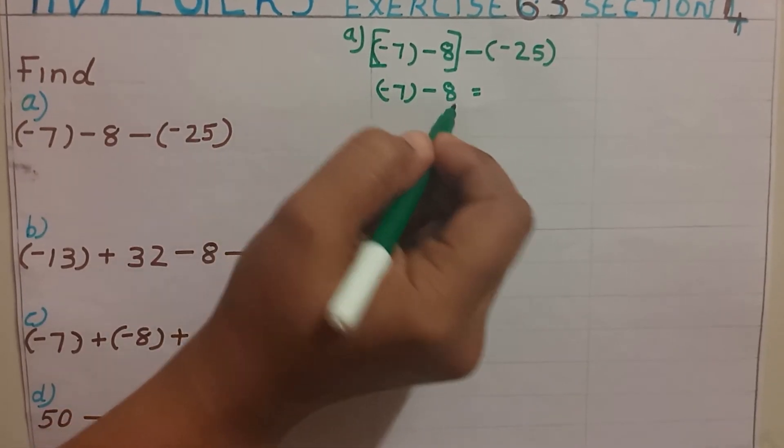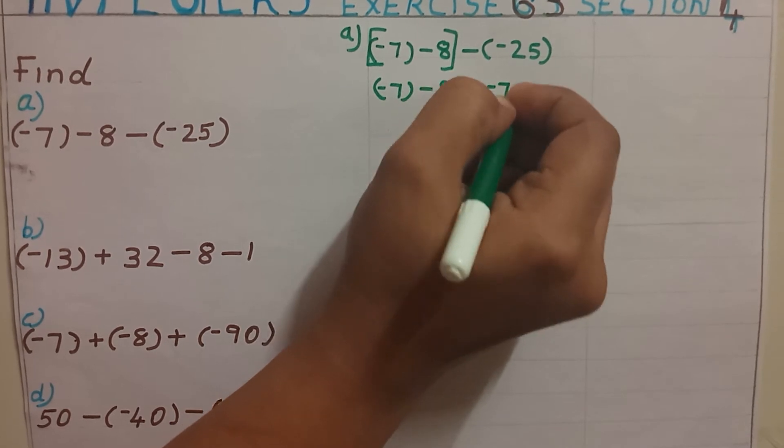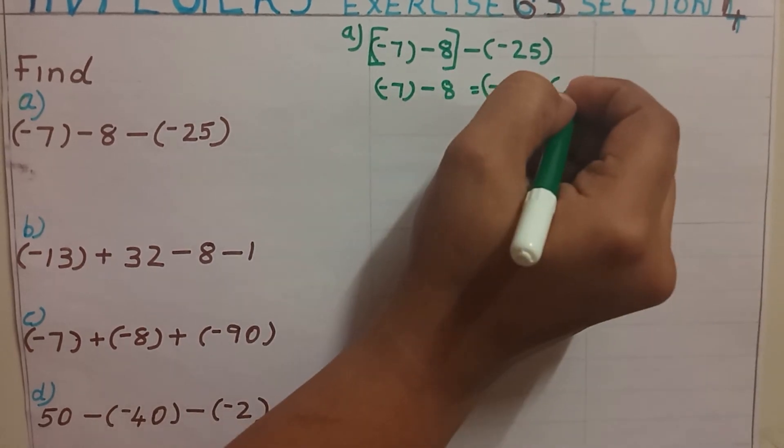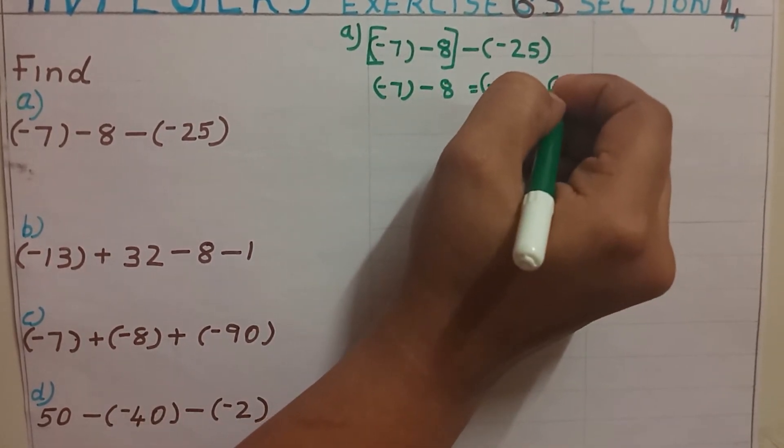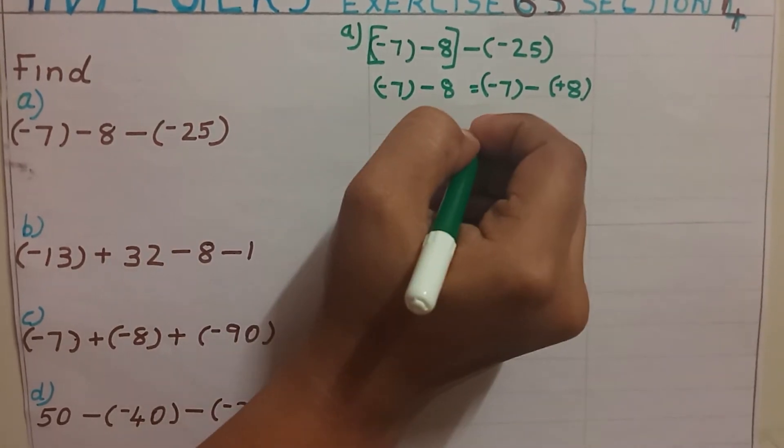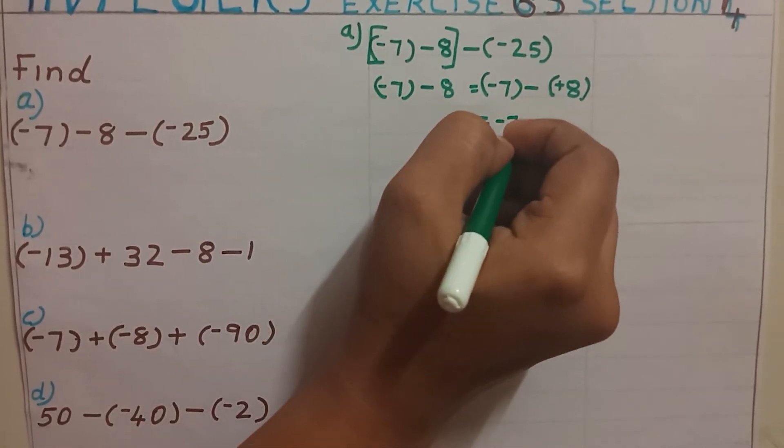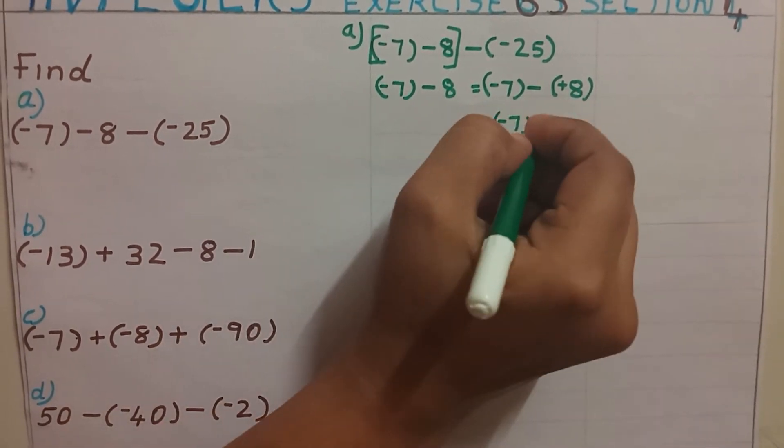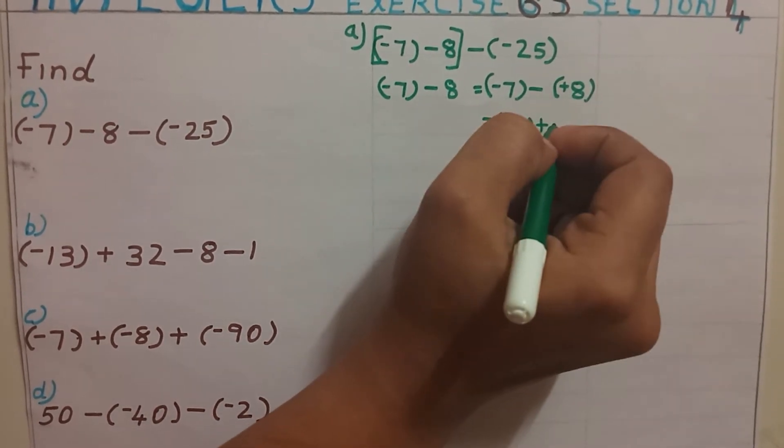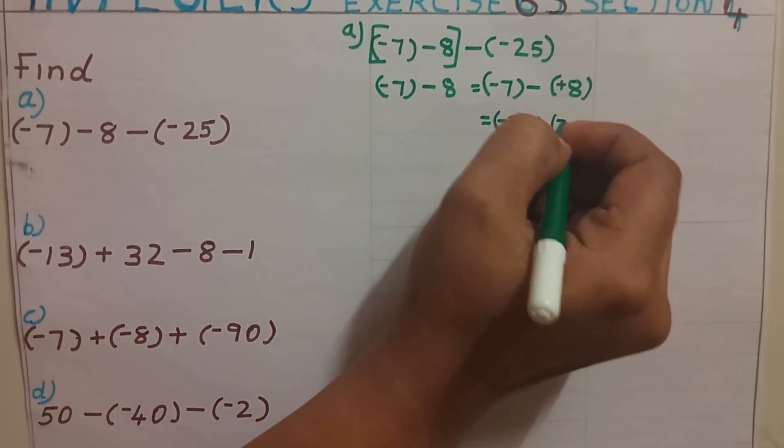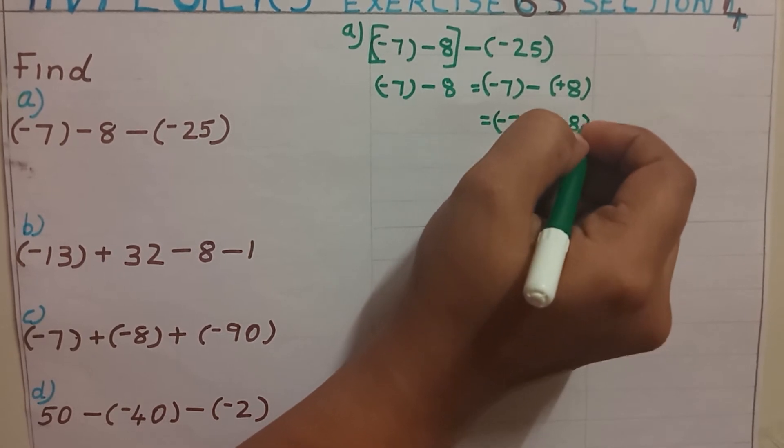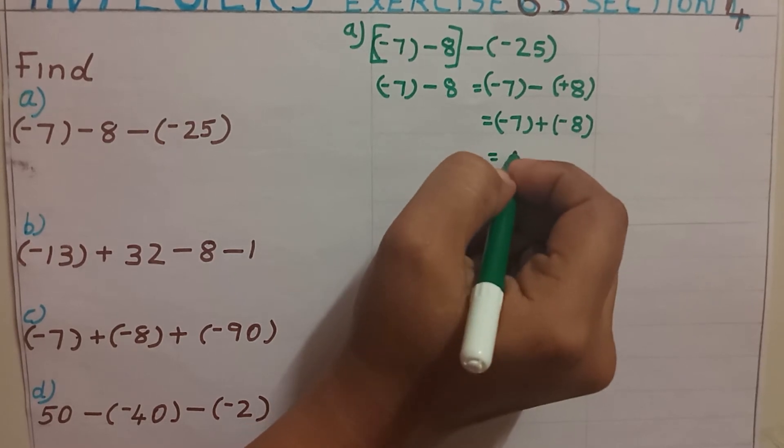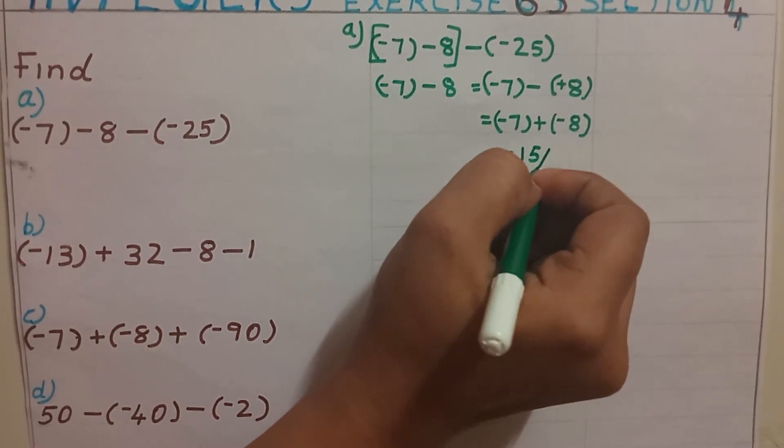Equal to minus 7 minus, again I am keeping 8 in a bracket and giving the sign as positive. So minus 7, now I know the operation is subtraction, so I am going to change it to addition by taking additive inverse of the second number, that is minus 8. So both are negative, so answer of the first bracket is minus 15.